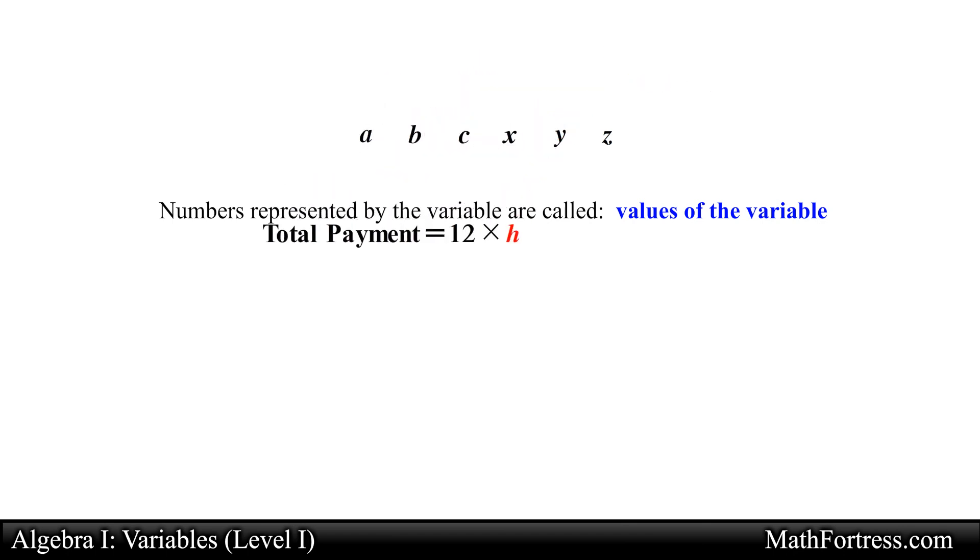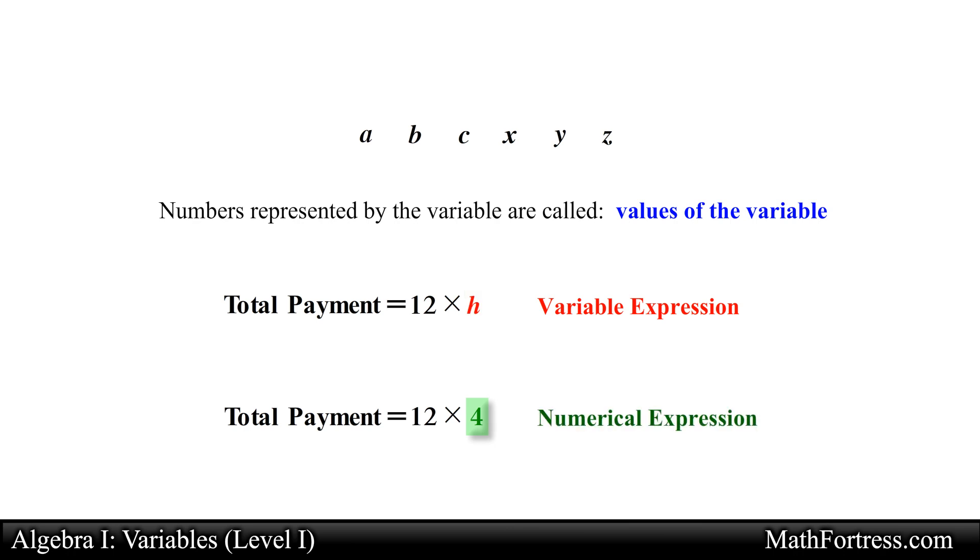An expression that contains variables such as 12 times H is called a variable expression. If we decide to let H represent a number, let's say that we decide to let it equal to 4, our variable expression now becomes a numerical expression. Notice that we have nothing but numbers in our expression. That is to say, the expression does not have any variables. It only contains numbers, hence it is a numerical expression.